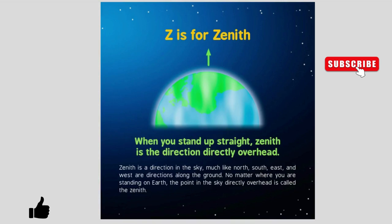Z is for Zenith. When you stand up straight, zenith is the direction directly overhead. Zenith is a direction in the sky, much like north, south, east, and west are directions along the ground. No matter where you are standing on Earth, the point in the sky directly overhead is called the zenith.